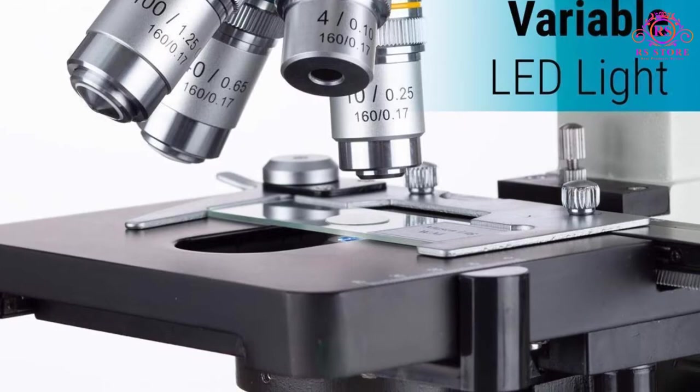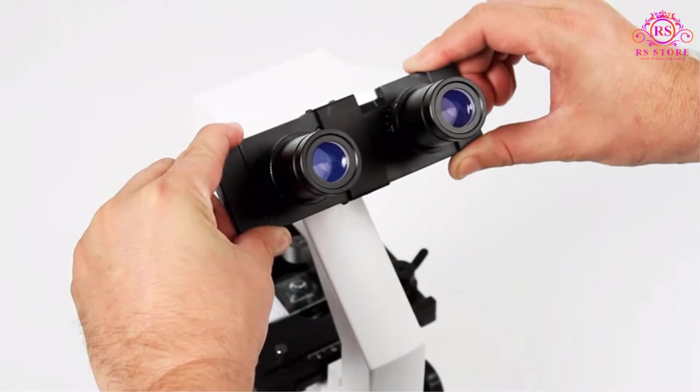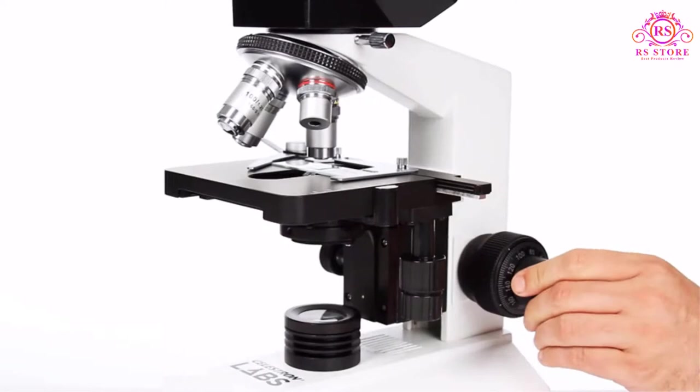With the slide in place, you can't switch objective lenses because they hit the retaining screw when the unit turns. This adds quite a bit of work each time you want to change magnification levels and held the OMAX microscope back from achieving our recommendation.